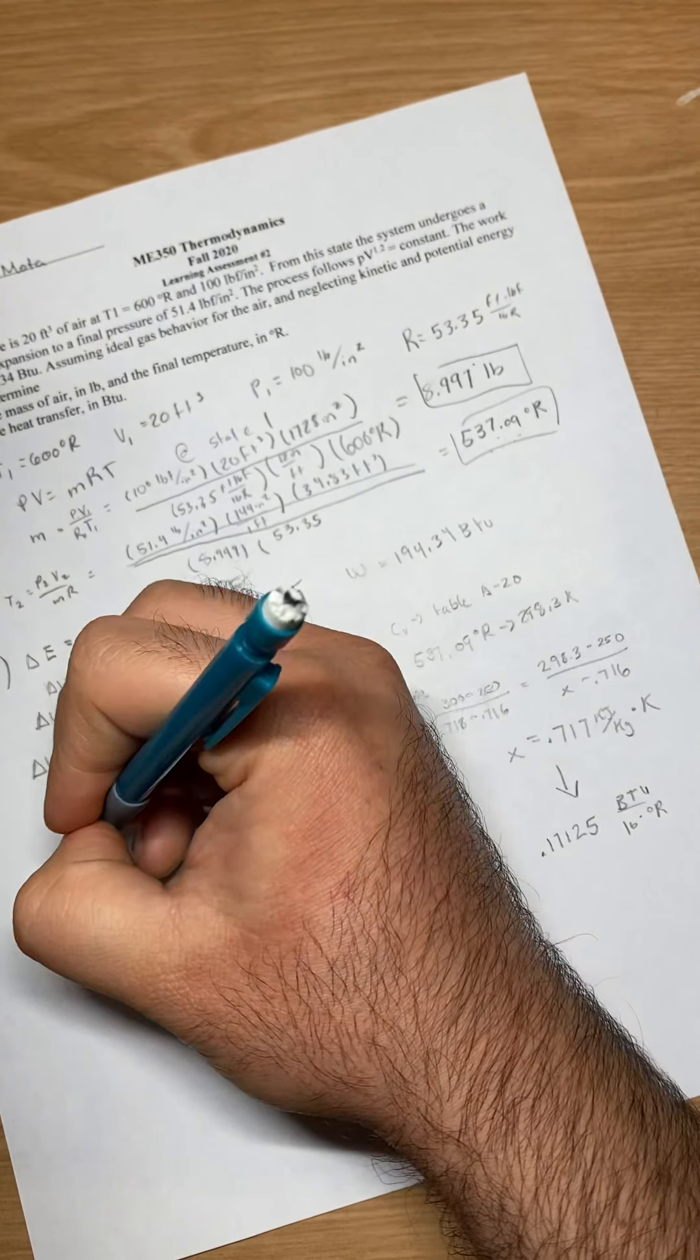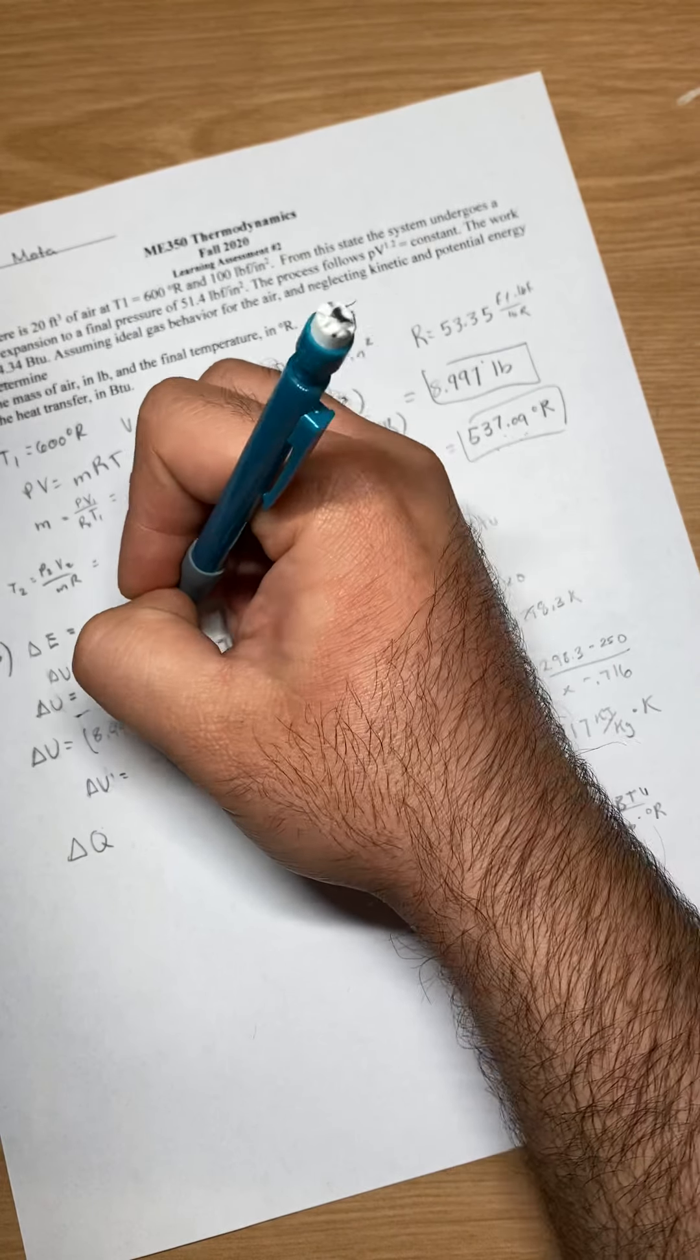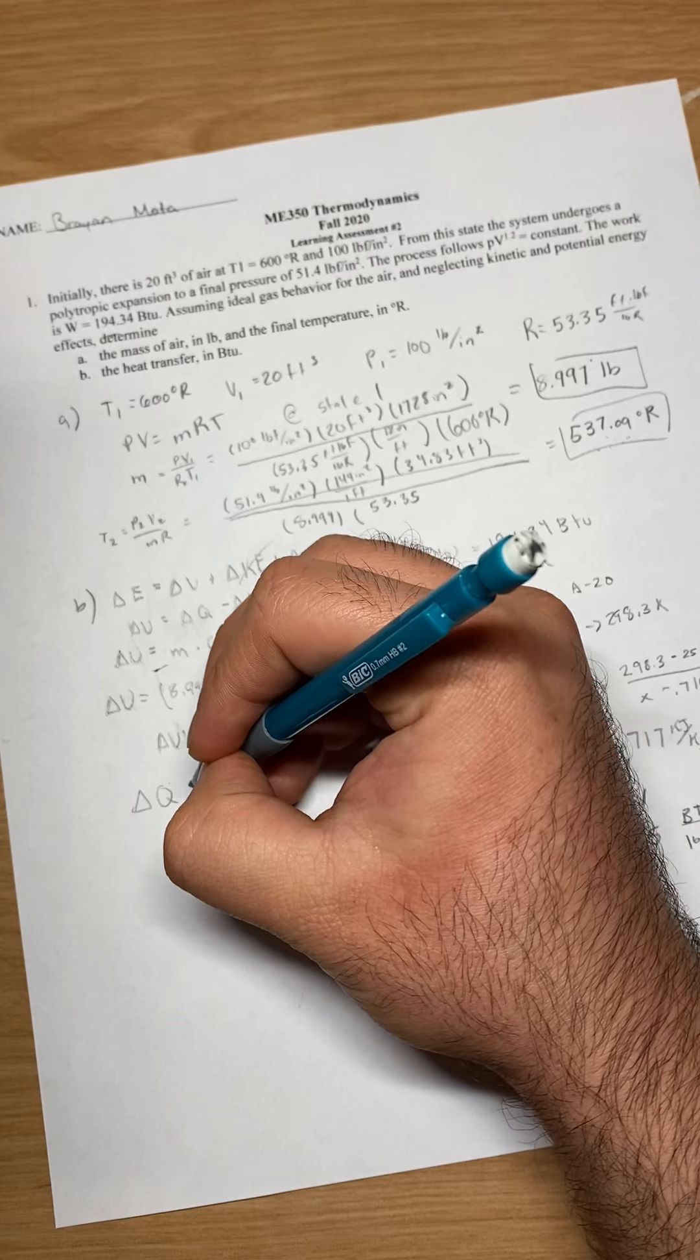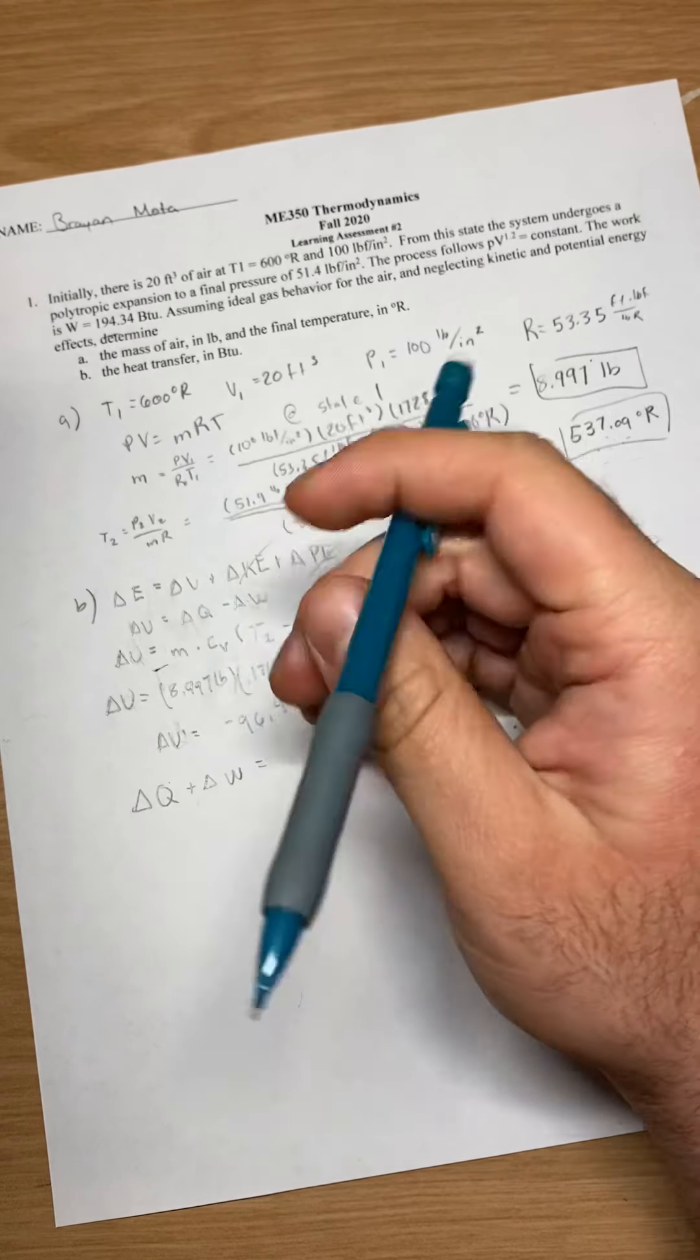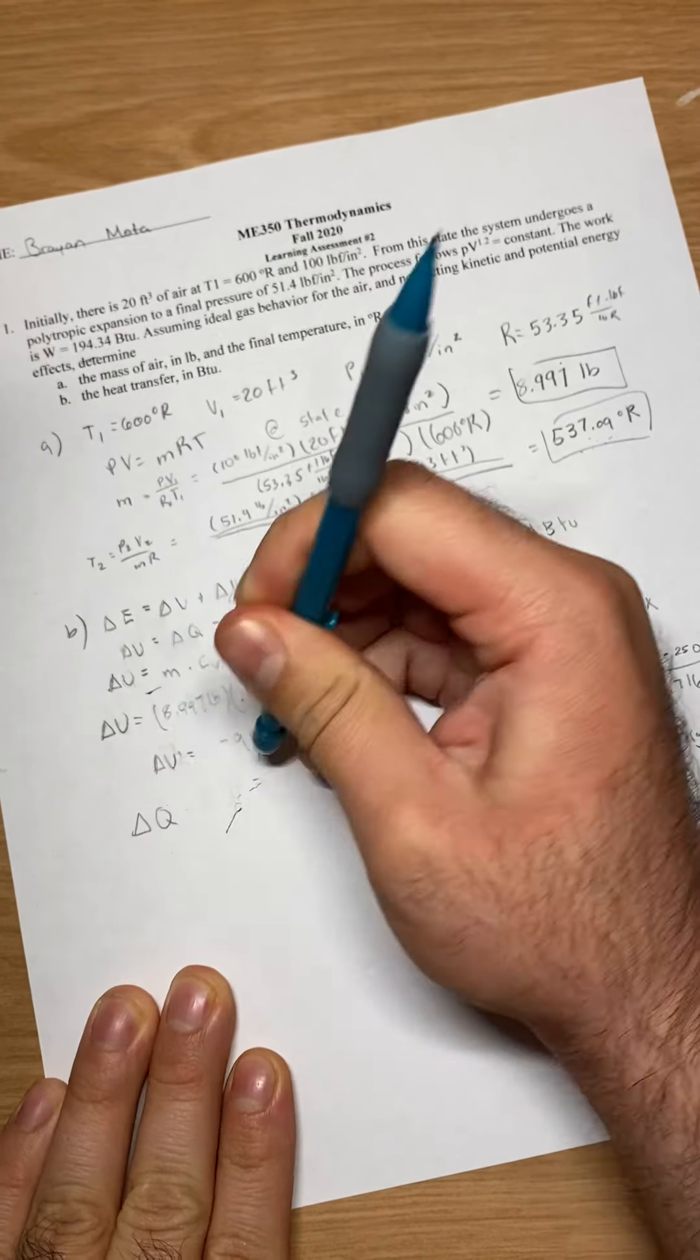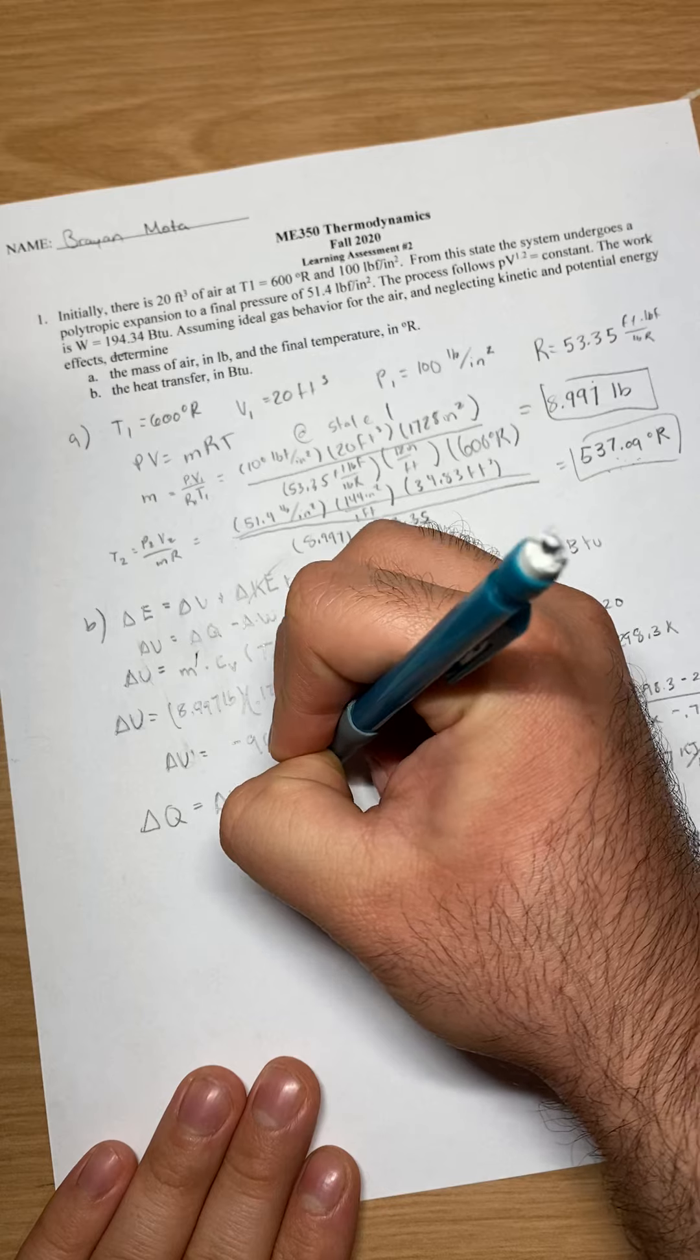And my equation for Q, if I manipulate that and I add my work to the other side, then I get plus work equal... delta Q equals delta U plus delta work.